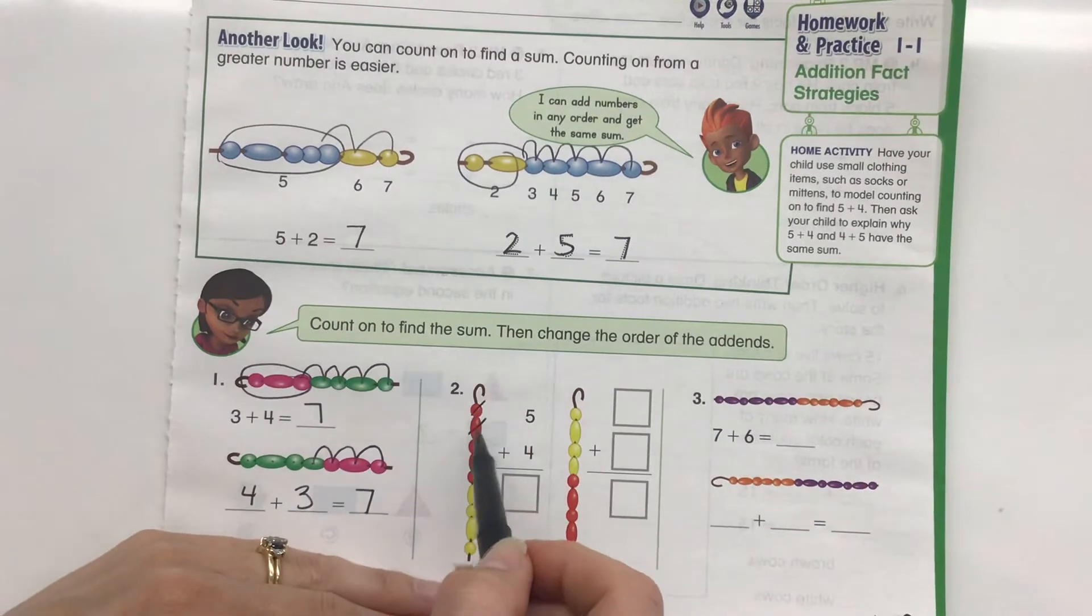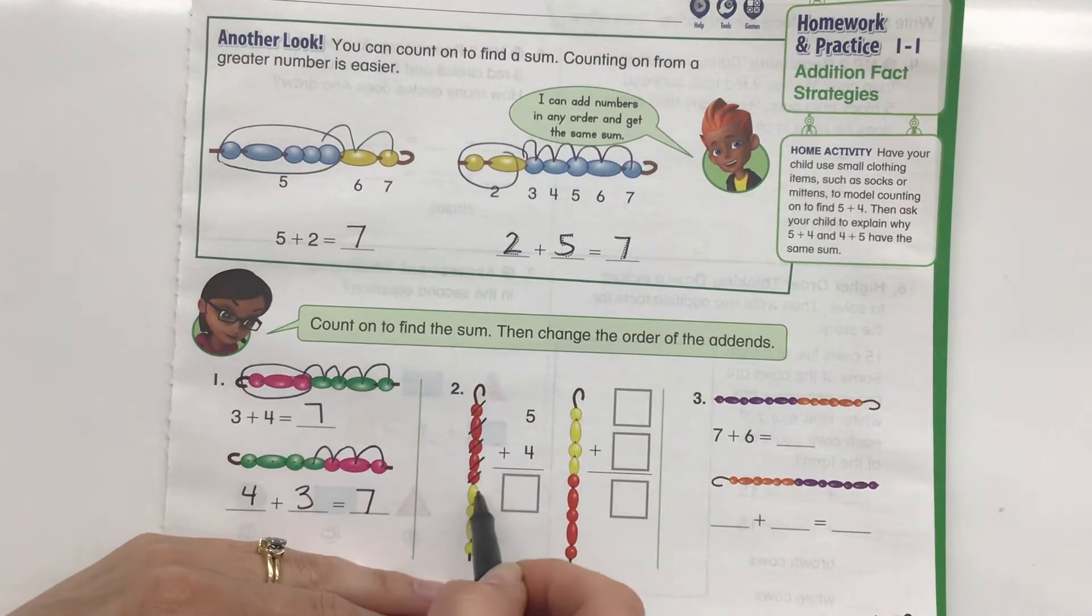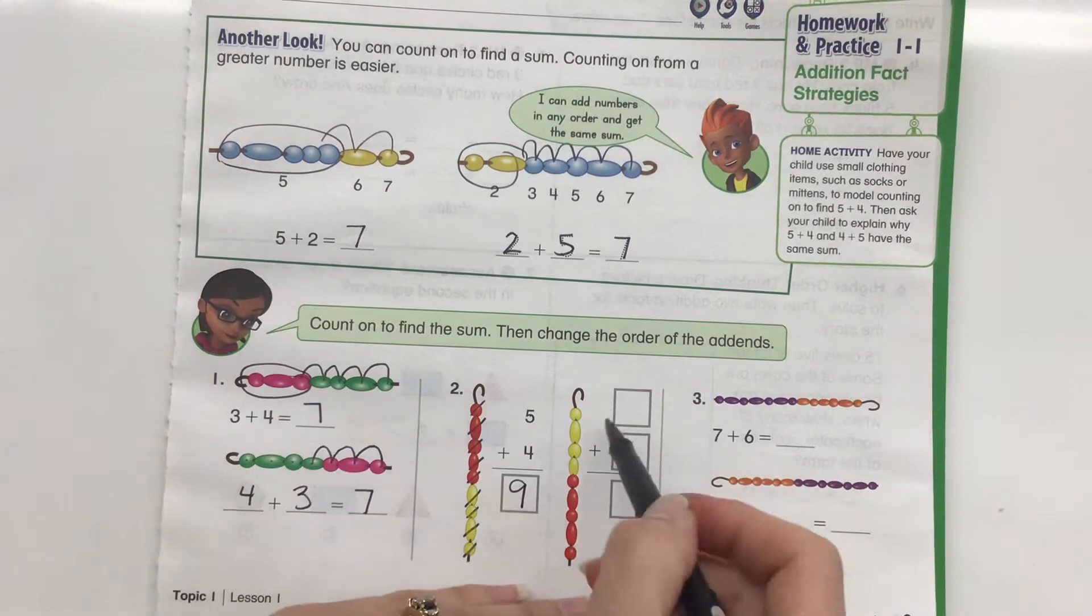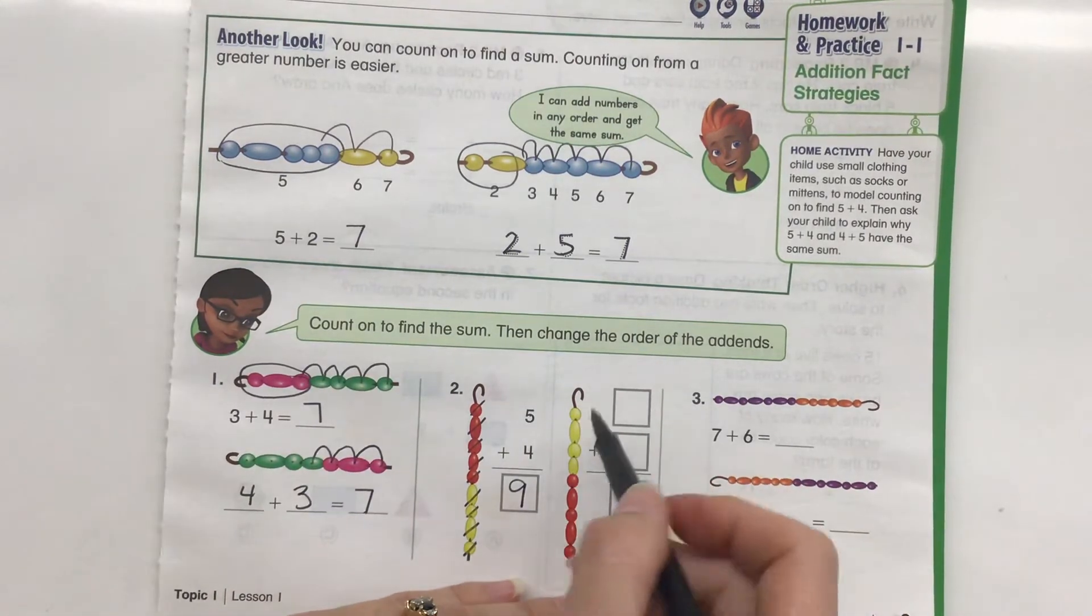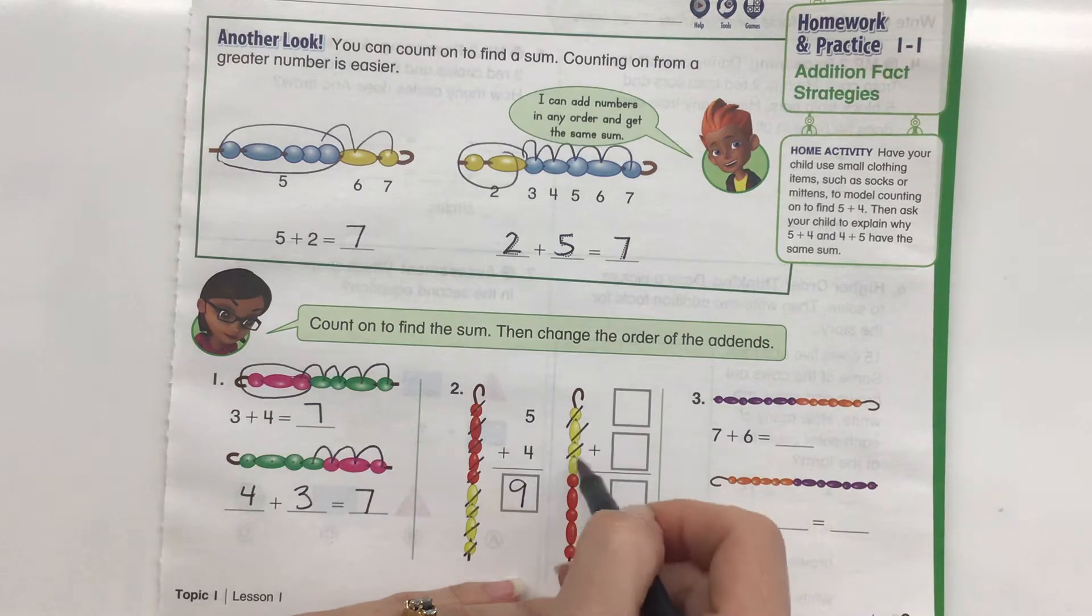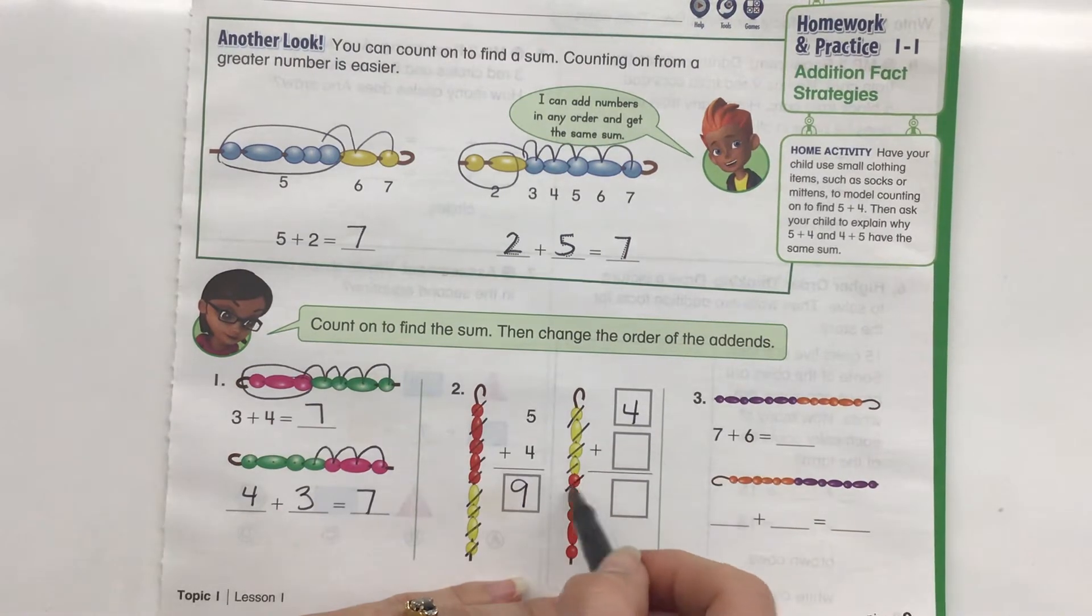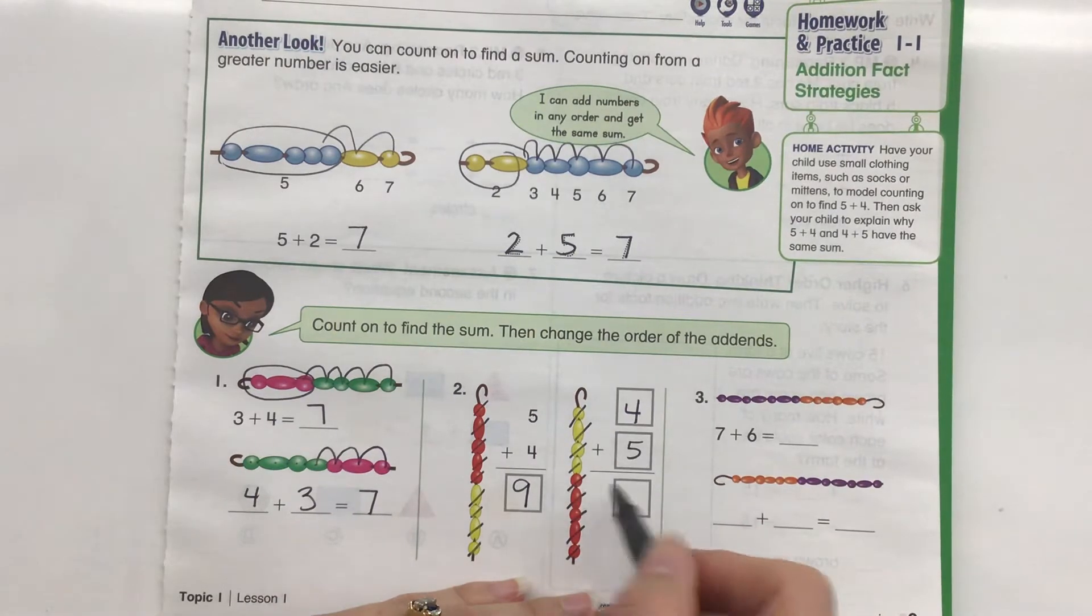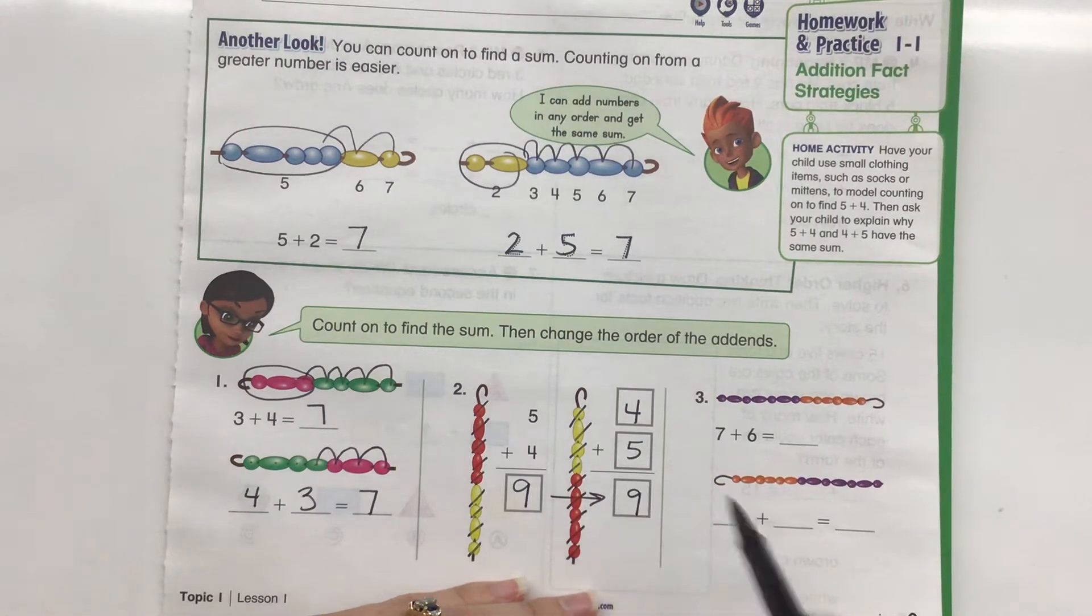Let's take a look at this one: 1, 2, 3, 4, 5 plus 1, 2, 3, 4 is a total of 9. Now, let's take a look. We're just switching the order of addends. 1, 2, 3, 4 plus 1, 2, 3, 4, 5. 4 plus 5. Do I even need to add this again? Nope. It's exactly the same.